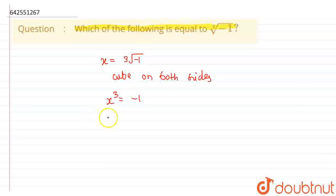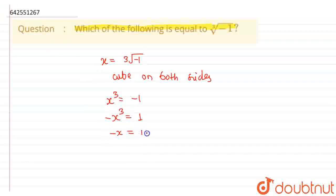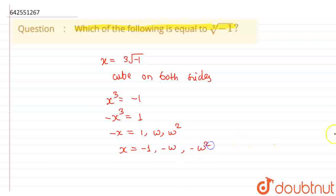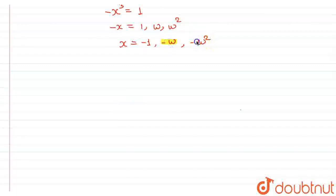So, if I take minus on this side, this would be minus x cubed is equal to 1. So, what are the roots of minus x cubed equals 1? The roots are 1, omega, and omega squared. So if I take minus on this side, x is equal to minus 1, minus omega, and minus omega squared.